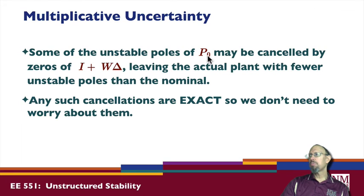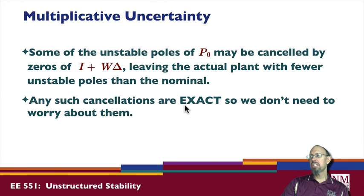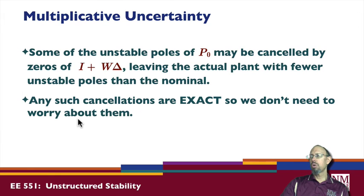Some unstable poles of P-zero may be cancelled by the factor one plus W-delta, leaving the actual plant with fewer unstable poles than the nominal — which is kind of interesting. However, in such a case any such cancellations are exact, so we don't need to worry about them. We definitely have a problem if there are cancellations of unstable poles, but in this case the cancellations would be exact.